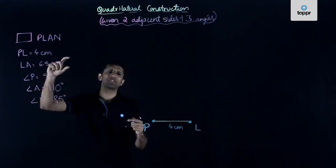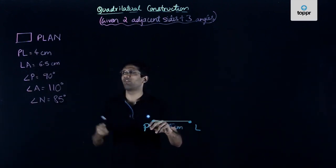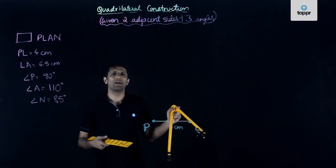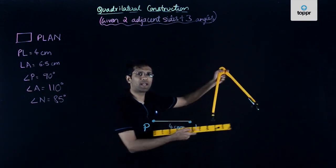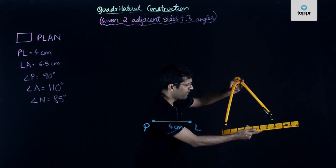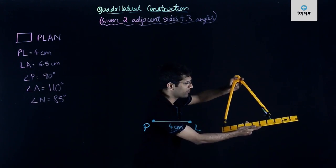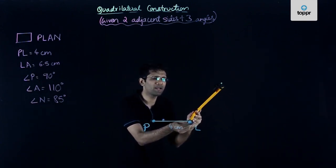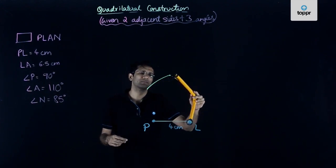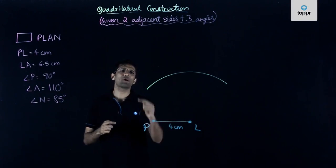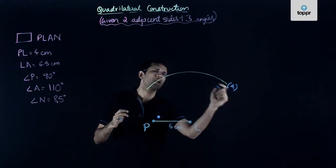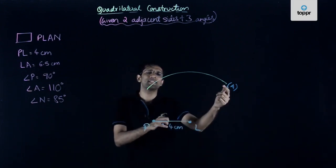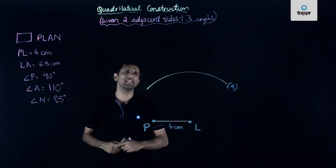Next, we have been given that LA is equal to 6.5 centimeters. So we can draw an arc of radius 6.5 centimeters from point L as the center. I take the compass and ruler and measure a distance of 6.5 centimeters, then place the tip at point L and draw an arc of radius 6.5 centimeters. We can say that point A lies somewhere on this arc, because every point on this arc is at a distance of 6.5 centimeters from L.